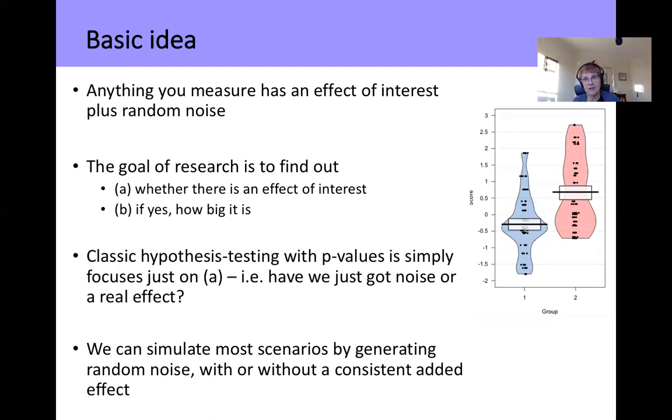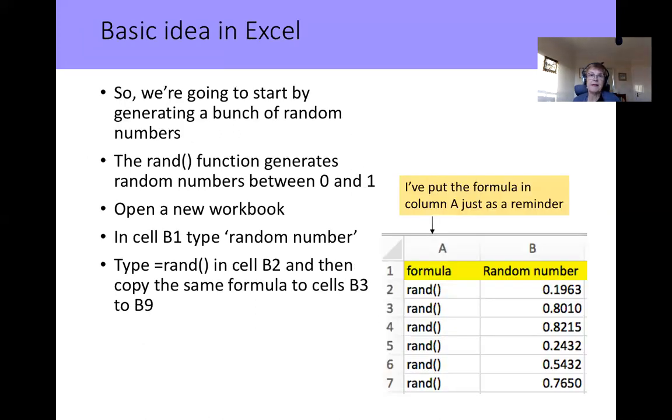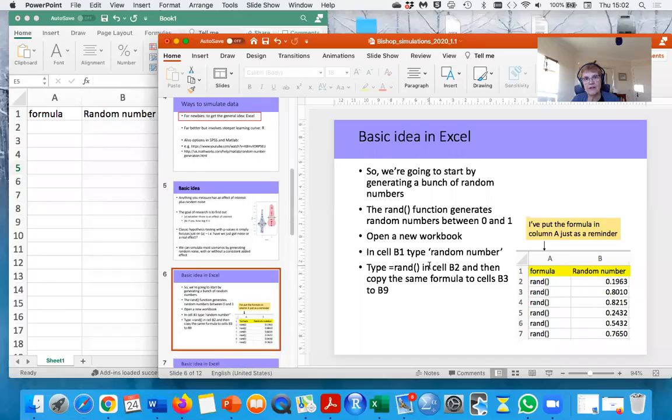And this first part of the course will focus on simulating null data sets and then we'll move on to look at what happens when you simulate real effects. But the basic idea in Excel is that you can start by simulating a bunch of random numbers and there is a function in Excel that will do that for you. It's called RAND and it generates random numbers between 0 to 1 and I'm going to just now move to show you my other screen with Excel on it so I can show you what we're doing here.